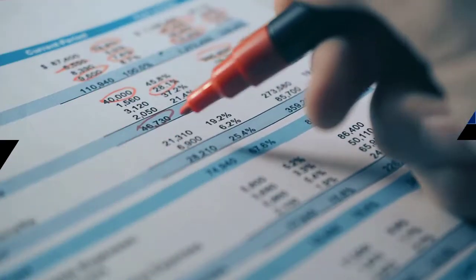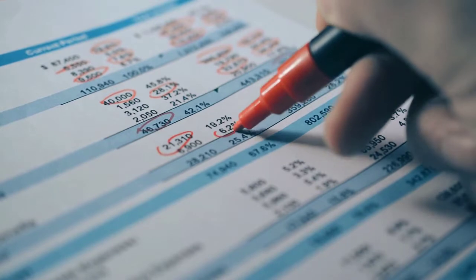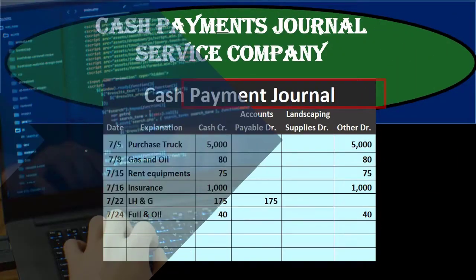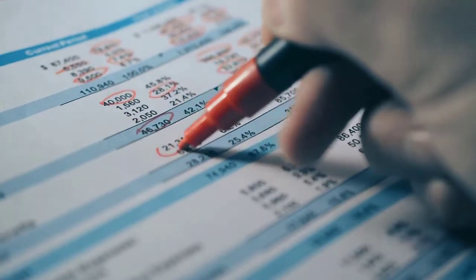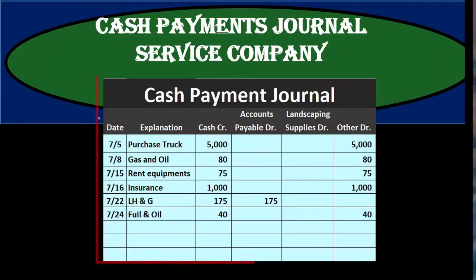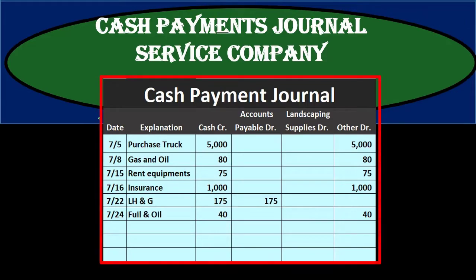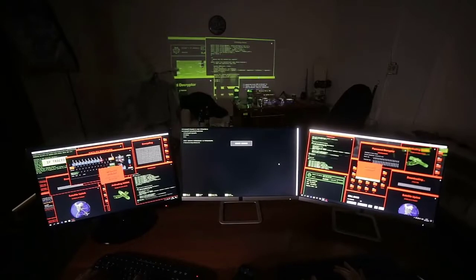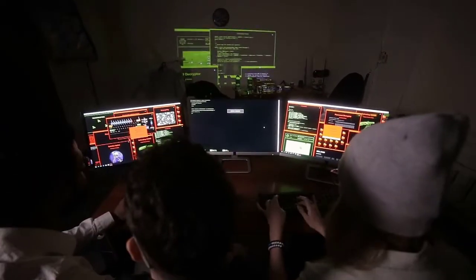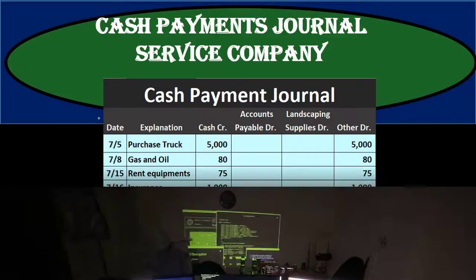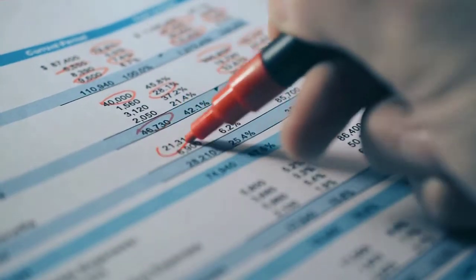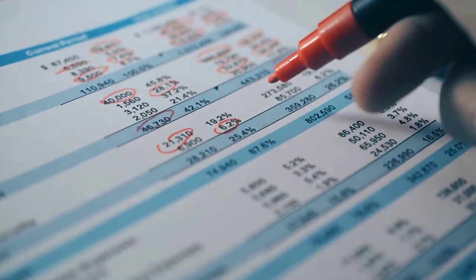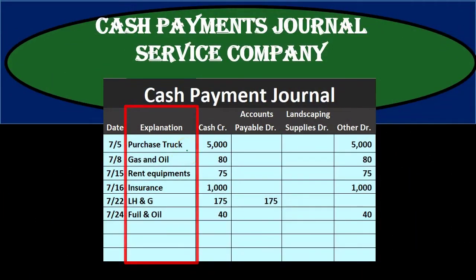The cash payments journal will be used when using more of a manual system rather than an automated system. However, it's good to know what the cash payments journal is even if using an automated system, because it's very likely that we would need to run reports similar in format to a cash payments journal. It's useful to see how different types of accounting structures and systems can be built.